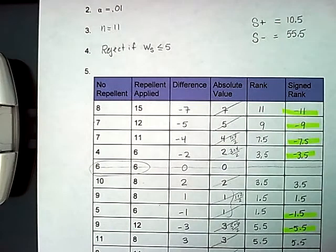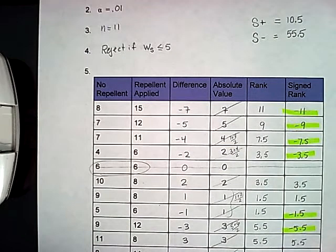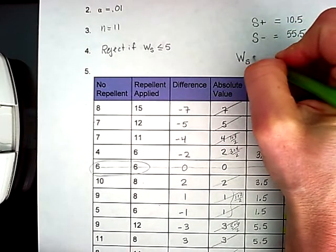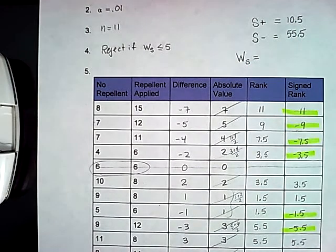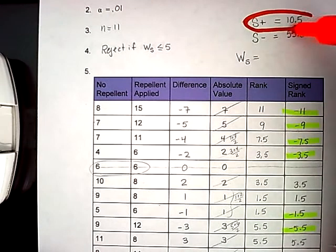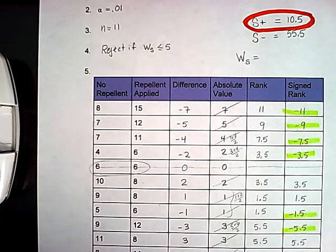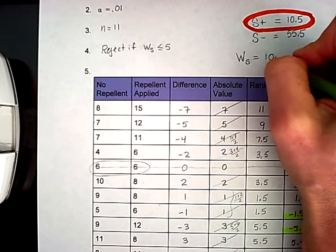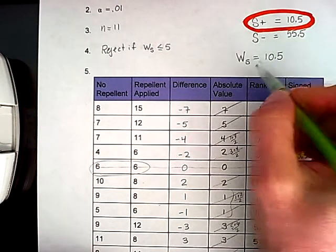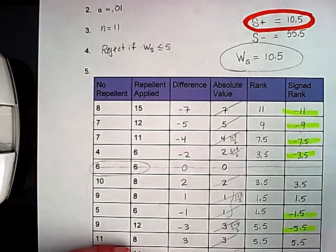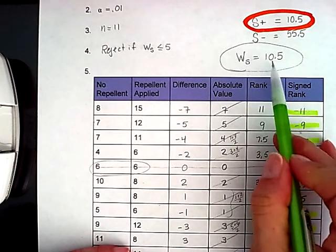Now what I need is for my test statistic, my W sub S, my test statistic is always going to be the smaller of these two values, whichever one is smaller. So that positive sum of 10.5 is smaller. That's going to give me my test statistic. So my test statistic ends up being 10 and a half, which you can see is too large to reject.